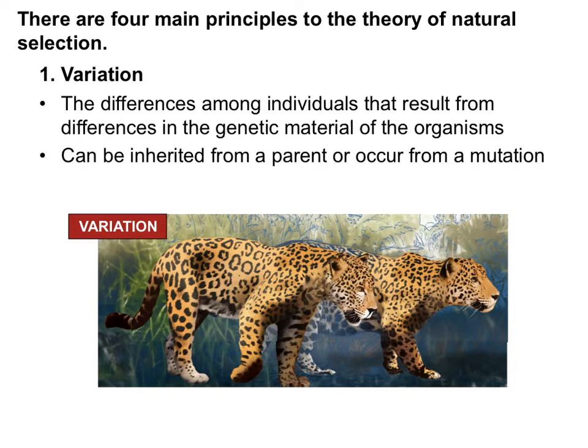There are four main principles of the theory of natural selection. The first requirement is variation — there have to be differences among a population for natural selection to act on. If nothing's different, nobody benefits and nobody is fitter than another individual. We need variation like the different skull sizes in these jaguars. These variations can come from a parent or occur randomly from a mutation.